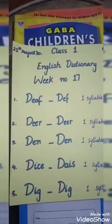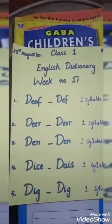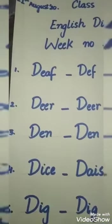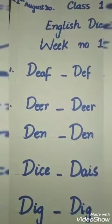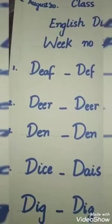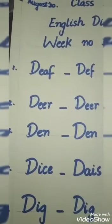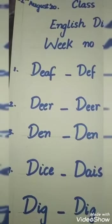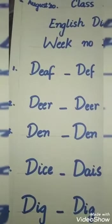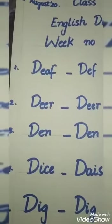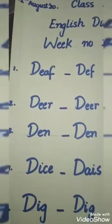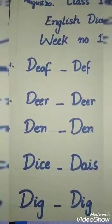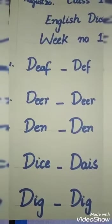Our fifth word is 'dig' — D-I-G. Dig. Now we will repeat these words again. First word: deaf — D-E-A-F. Second word: deer — D-E-E-R. Third word: den — D-E-N. Fourth word: dice — D-I-C-E. Fifth word: dig — D-I-G.